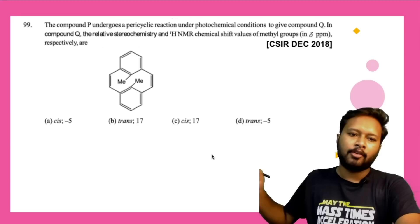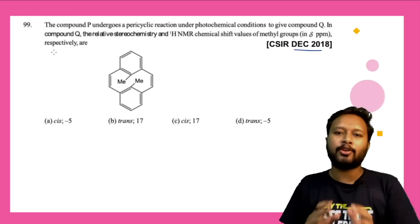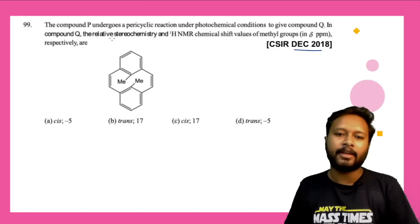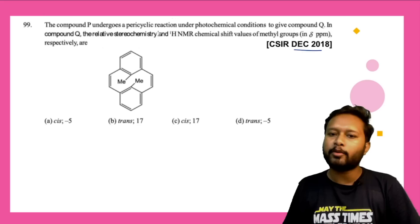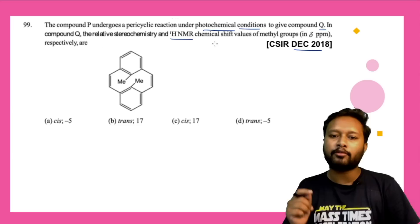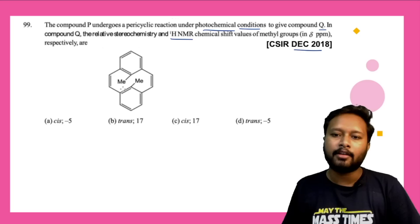The next question from CSIR December 2018 combines pericyclic reaction with NMR spectroscopy. You need to know both organic spectroscopy and pericyclic reactions to answer it. Compound P undergoes a pericyclic reaction under photochemical conditions to give compound Q. You have to tell the relative stereochemistry of the methyl groups and their proton NMR chemical shift.